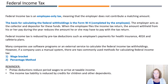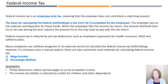Mandatory deductions include federal income tax for all employees. This is an employee-only tax, which means that the employer does not contribute a matching amount like employers do for FICA tax. The starting point for calculating the federal withholdings is the Form W-4, which is completed by the employee on paper or online. The employer acts as the collector and depositor for these funds. When the employee files the income tax return, the amount withheld from his or her pay during the year reduces the amount they may have to pay with their tax return. It is important to note that federal income tax is reduced by pre-tax deductions such as employees' payments for health insurance, 401(k), and cafeteria plans.